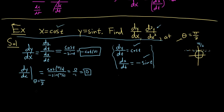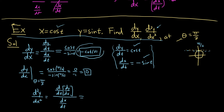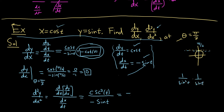Now let's find the second derivative. Recall the formula: d²y/dx² equals d/dt of (dy/dx) over dx/dt. Here dy/dx is negative cotangent t. The derivative of negative cotangent is cosecant squared t. Over dx/dt, which is negative sine t. Cosecant squared is 1 over sine squared, so this gives negative 1 over sine cubed t.